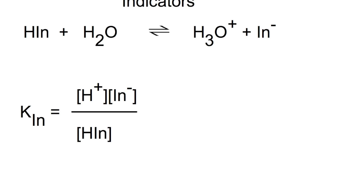Hello and welcome to this video on indicators. Indicators are commonly used in titration reactions to allow us to see the end point. Indicators are weak acids where the weak acid has a different color from its conjugate base.